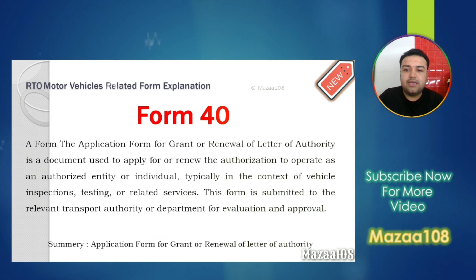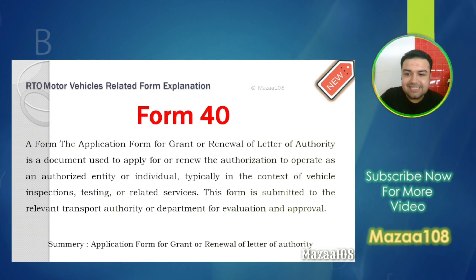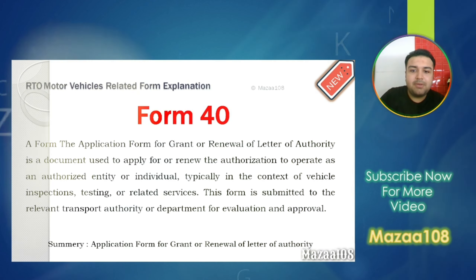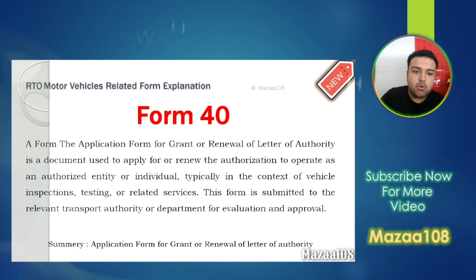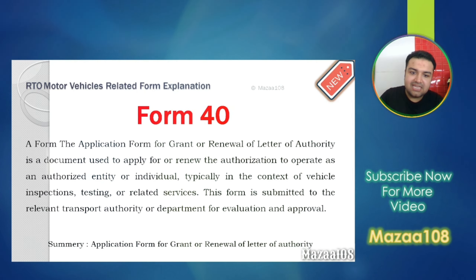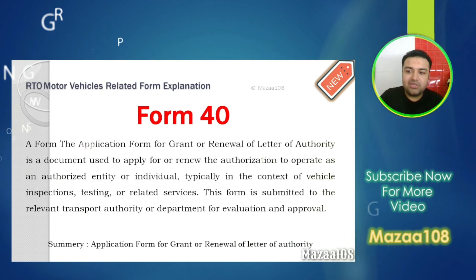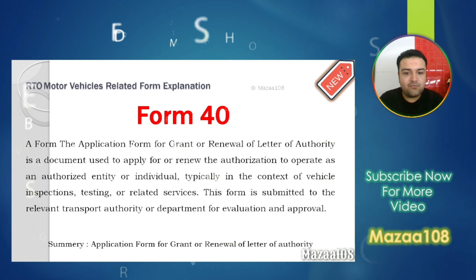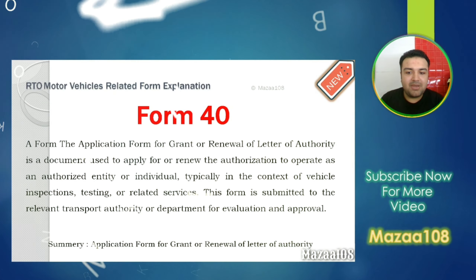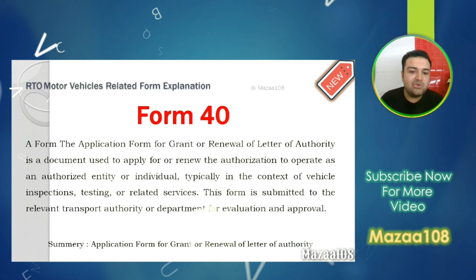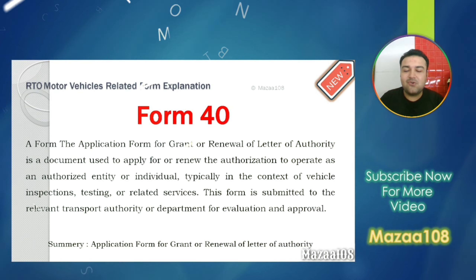Form 40 — the application for the grant or renewal of a letter of authority — is a document used to apply for authorization to operate as an authorized entity or individual, typically in the context of vehicle inspection testing or related services. This form is submitted to the relevant transport authority or department for evaluation and approval.